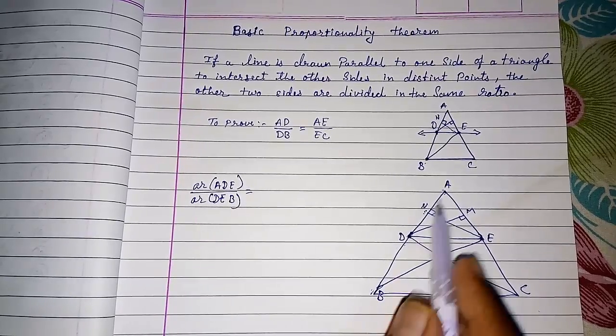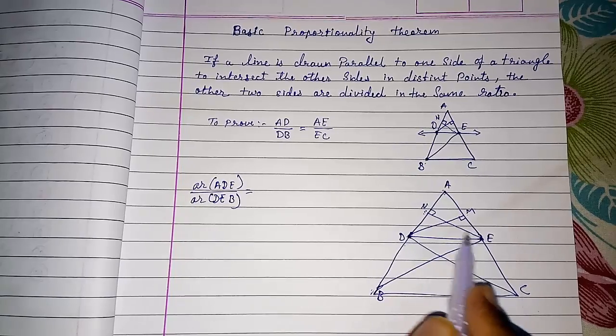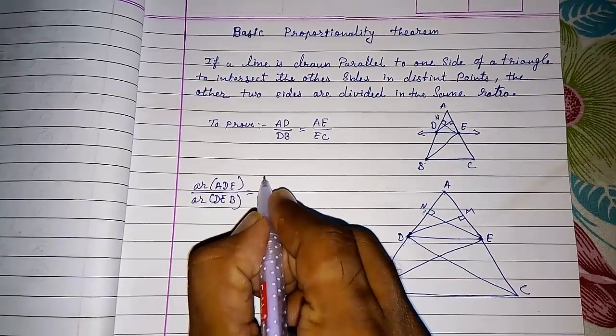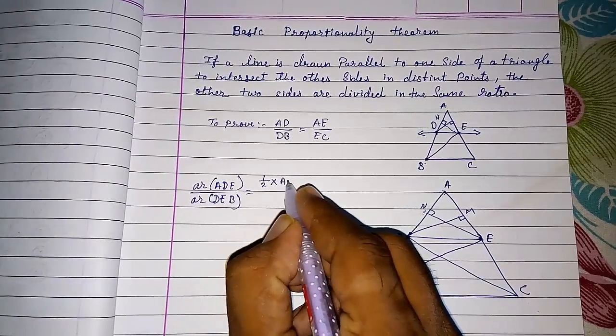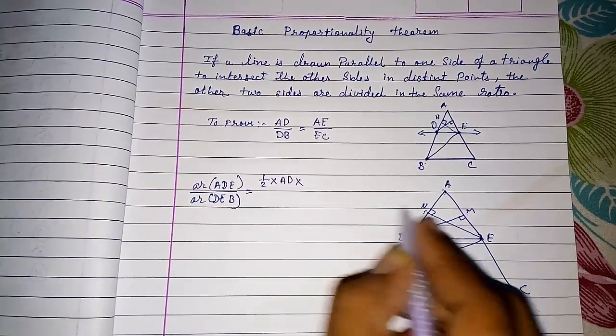You know, area of triangle is half into base into height. So here height will be, first we will write half, then base AD and height NE.